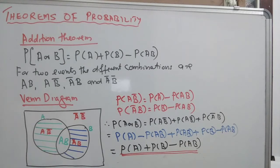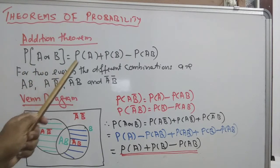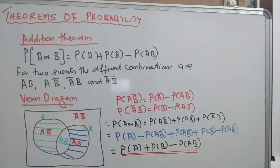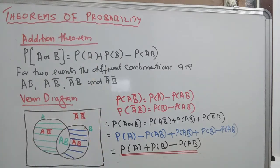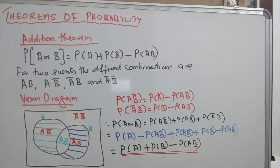Now we are explaining the addition theorem: P of A or B equals P of A plus P of B minus P of AB. We know that if A and B are any two events, there are different combinations. The four compound event components are AB, AB-bar, A-bar B, and A-bar B-bar. Using these concepts, we illustrate the addition theorem visually by means of an event diagram.